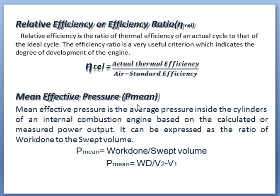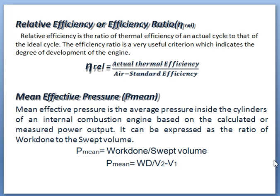Mean effective pressure, P suffix mean — mean effective pressure is the average pressure inside the cylinders of an internal combustion engine based on the calculated or measured power output. It can be expressed as the ratio of work done to the swept volume. That is, P suffix mean equals work done per swept volume, or P mean equals work done divided by V2 minus V1, where V1 and V2 are the volumes at points 1 and 2.